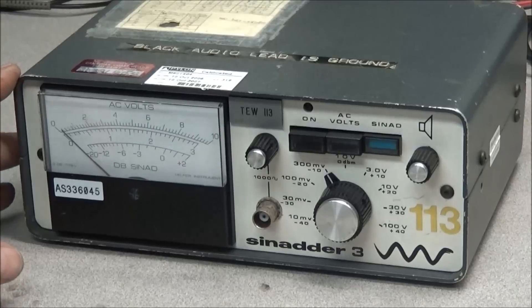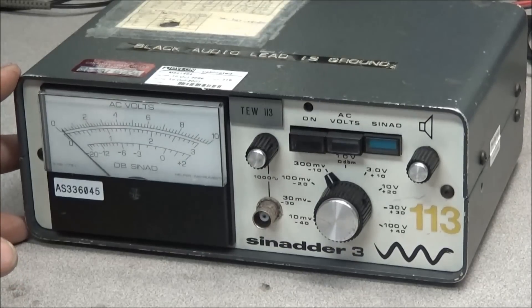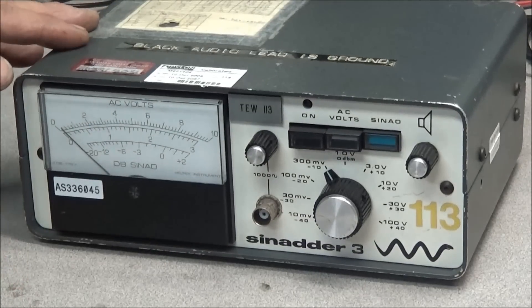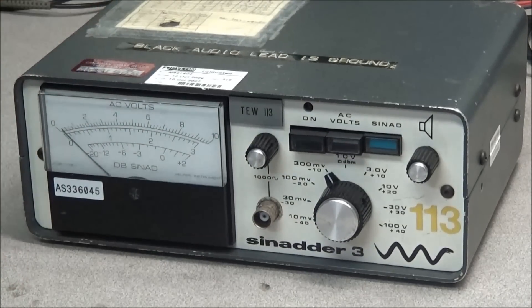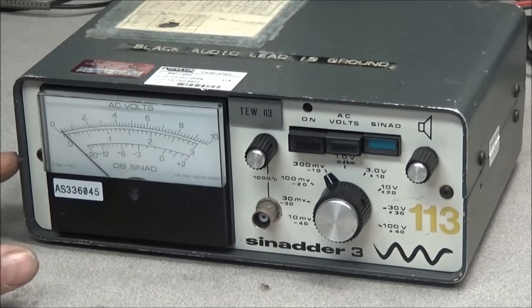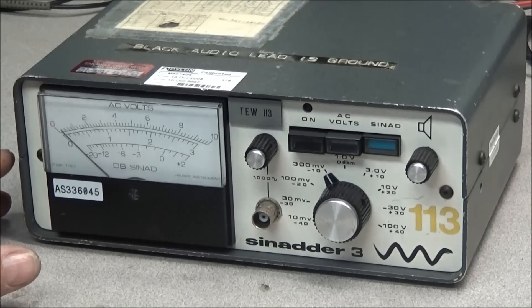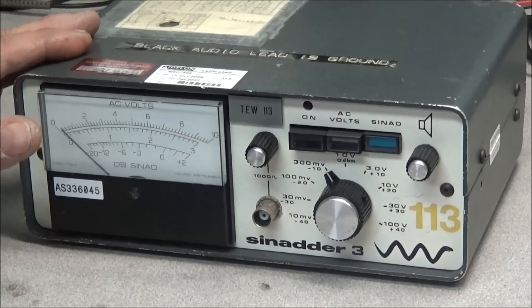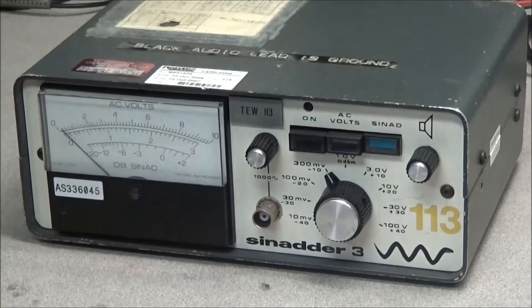Out of, I think it was the Heathkit manual, there's a couple of Motorola SINAD meters that is very simple to use. I think it's two op-amps in it, so it's not a very complicated system to build. But let's see what we have here.